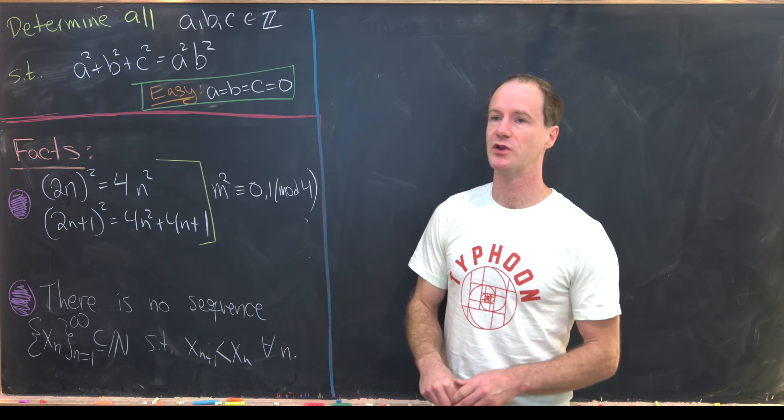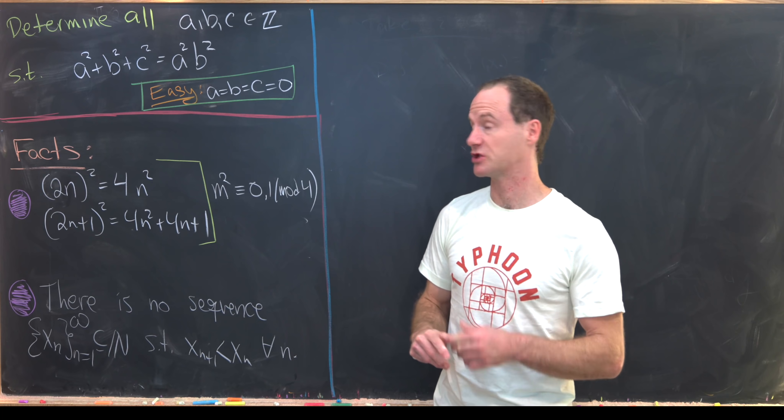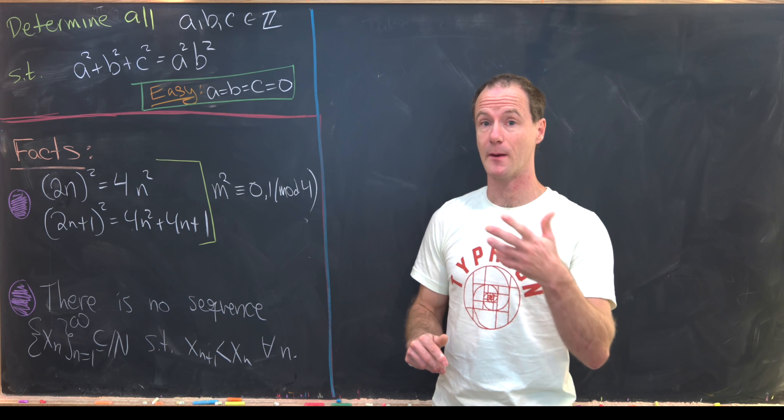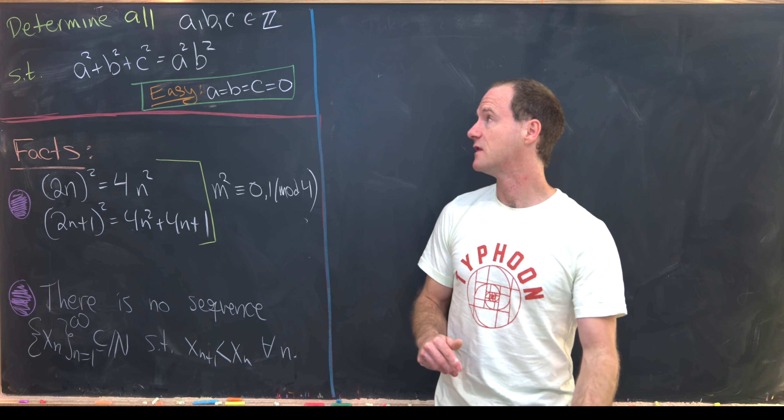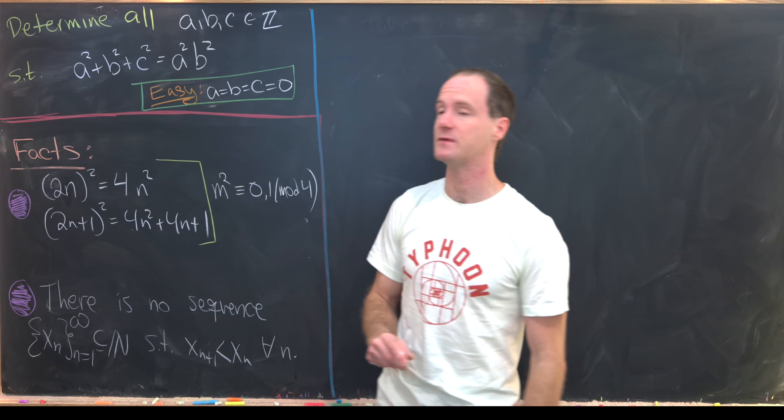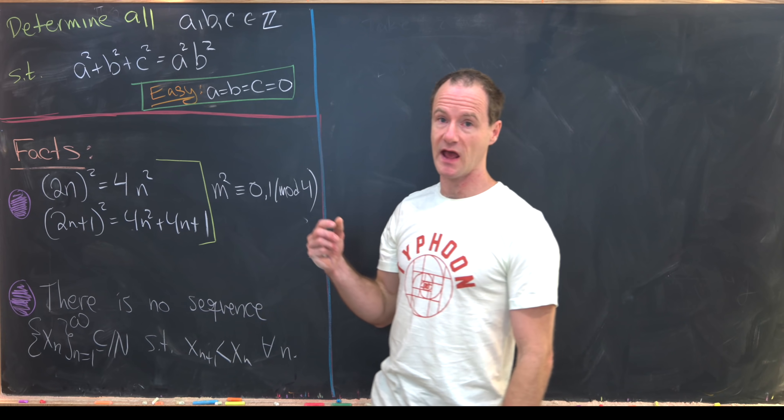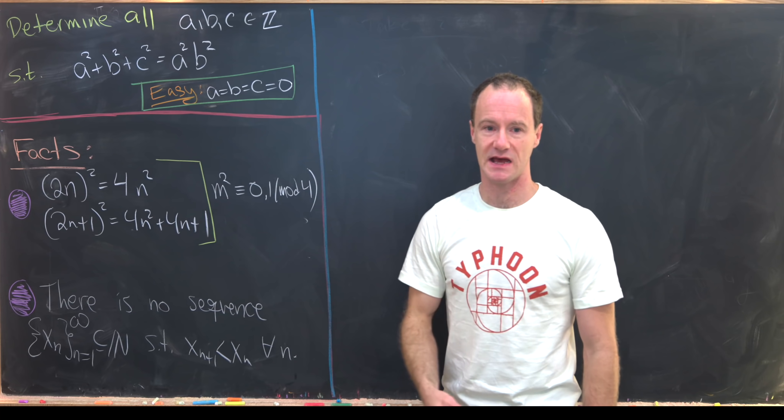Another thing that we'll notice as we get going is that there's some sort of symmetry within the solutions. If we have a solution for a positive value of a, then we also have a solution for the corresponding negative value of a because a is only showing up in our equation as being squared. And similarly for b and c.